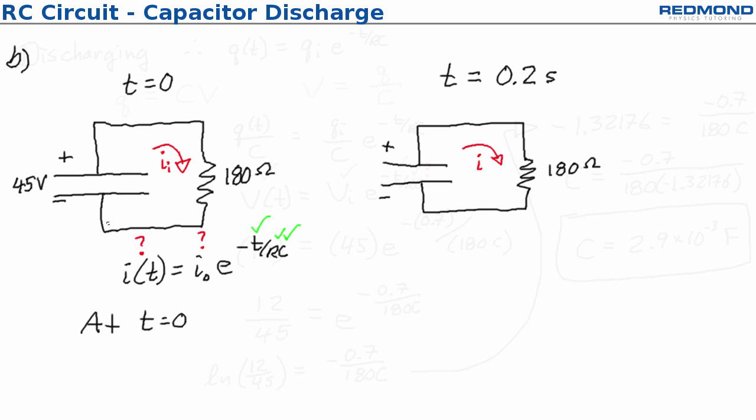So at t equals 0, which is just after this circuit was connected, we can actually calculate the initial current through the resistor is equal to the voltage across the resistor divided by the resistance and that basically comes from V equals IR. Now we know the voltage across the resistor has to be equal to the voltage across the capacitor because those two elements are in parallel.